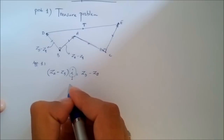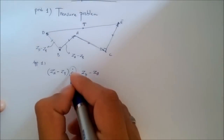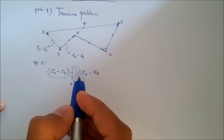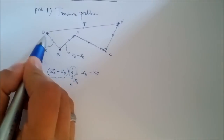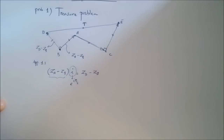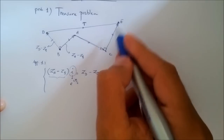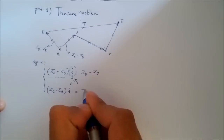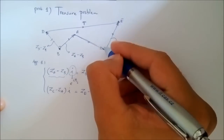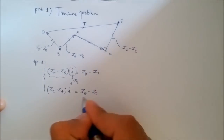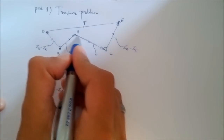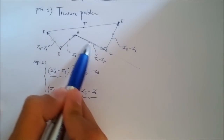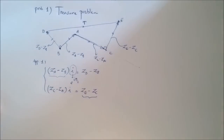We have that (Z_A − Z_B) × i = Z_D − Z_B, where multiplying by i, or e^(iπ/2), gives a counterclockwise rotation. In the same manner, (Z_C − Z_A) × i = Z_E − Z_C, because the vector CE is Z_E − Z_C and the vector AC is Z_C − Z_A. Multiplying that vector by i gives us the rotated vector.